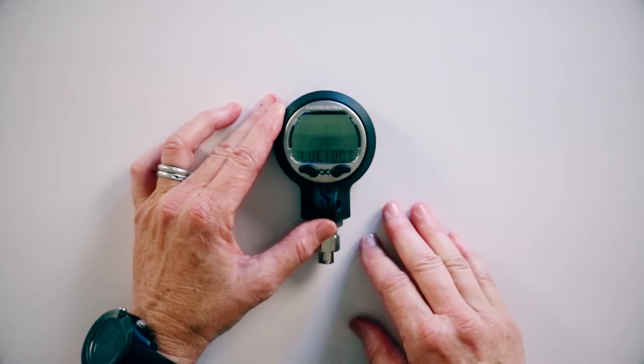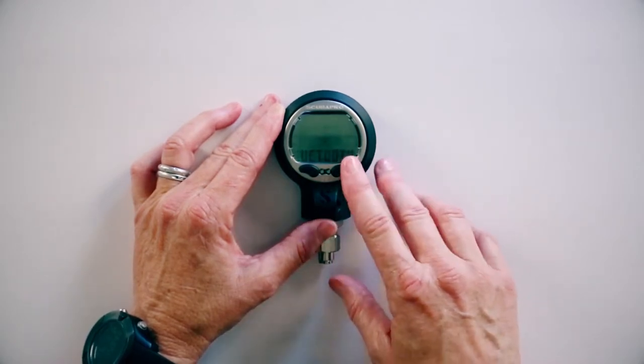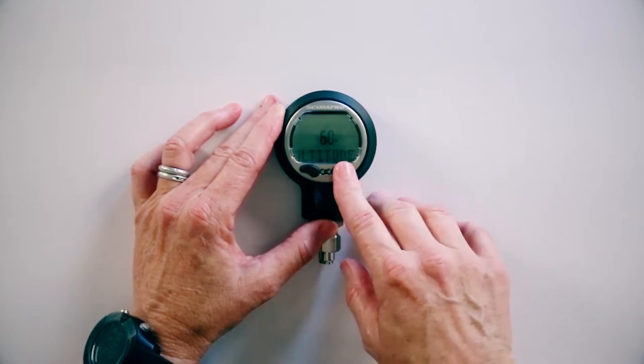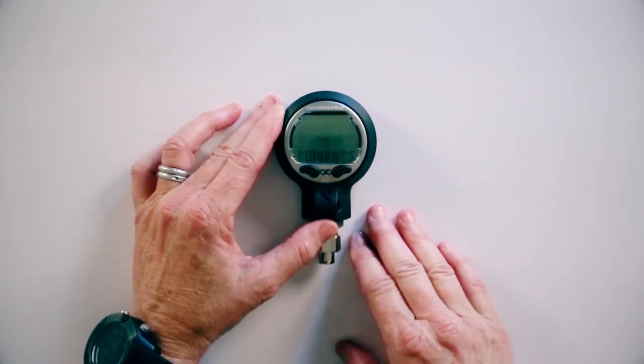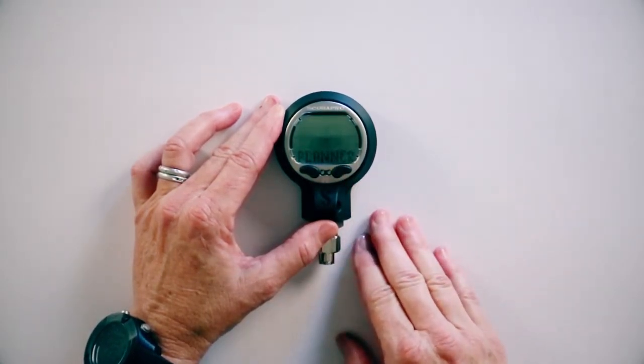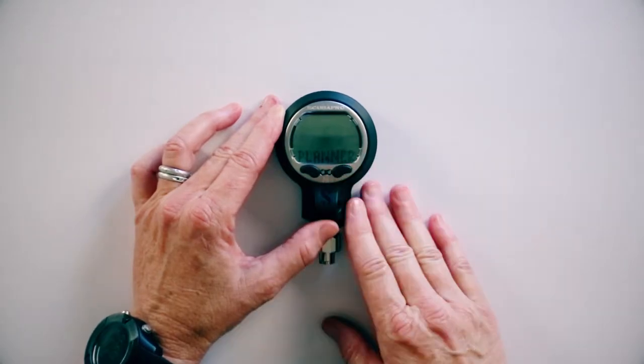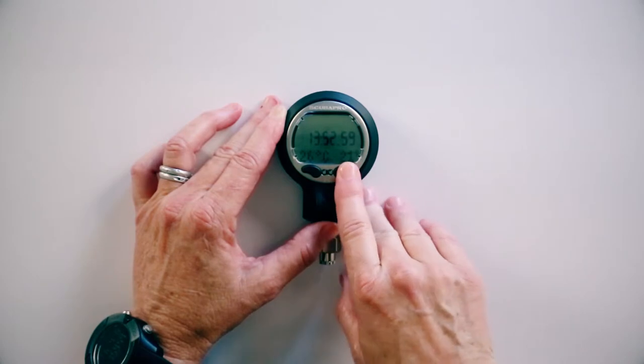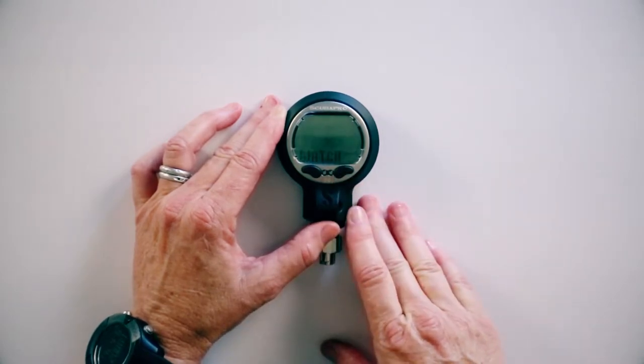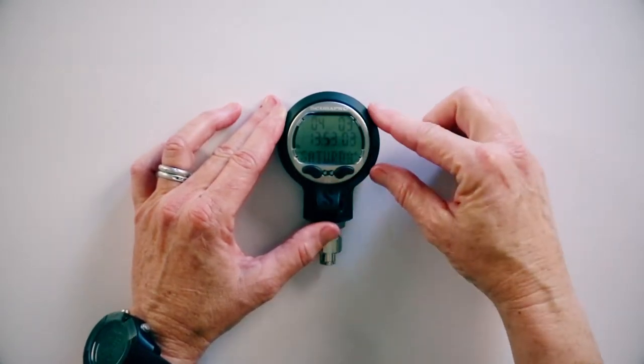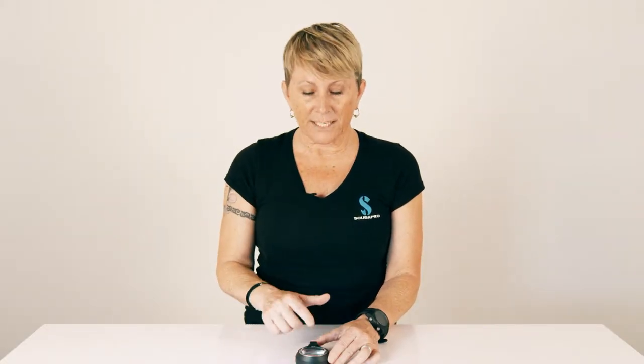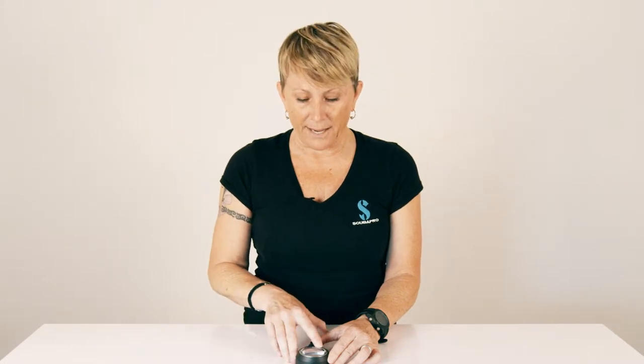Our first function is Bluetooth. We're going to deal with that on another video. We're going to go forward again, and you have your altitude, compass, dive planner, log book, and the time, and then the watch. So now we're back at the home screen with the date and the time. Instead of going through all those functions to set up the watch, we're just going to hit the back button from the home screen and we'll be right there.